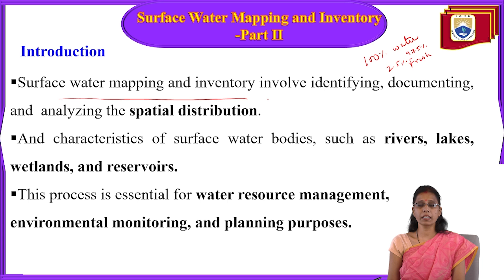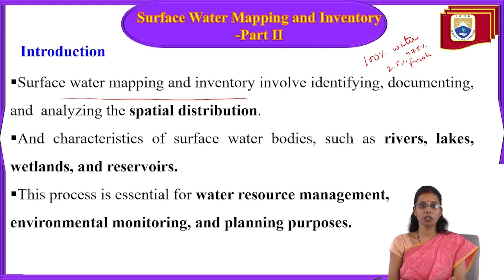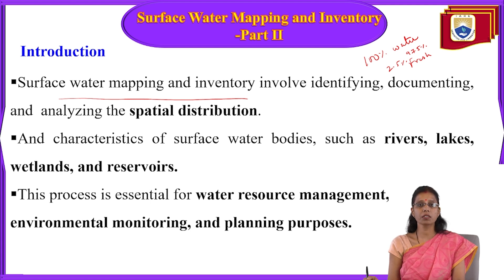Surface Water Mapping and Inventory involve identifying, documenting, and realizing the spatial distribution of water bodies. Surface Water Mapping helps us identify water bodies like rivers, lakes, or ponds, demarcate them on a map, and use this mapping for documentation. Using GIS, we can show how water is distributed across different parts of the Earth's surface, including water quality and the presence of minerals.